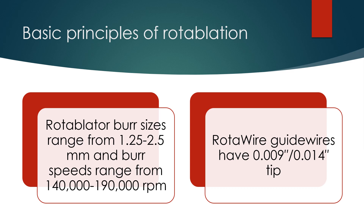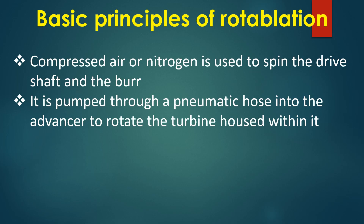Rotablator bur sizes range from 1.5 to 2.5 mm and bur speeds range from 140,000 to 190,000 rpm. Rotawire guidewires have 0.009 inch and 0.014 inch tips. Compressed air or nitrogen is used to spin the drive shaft and the bur, pumped through a pneumatic hose into the advancer to rotate the turbine housed within it.